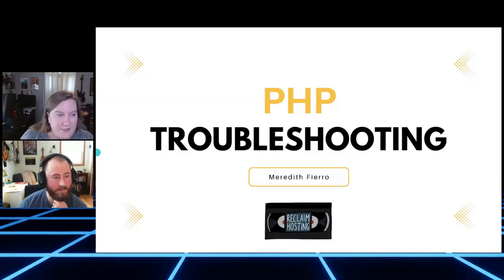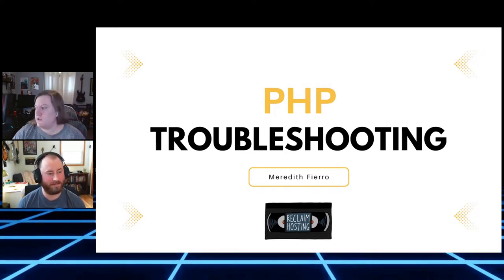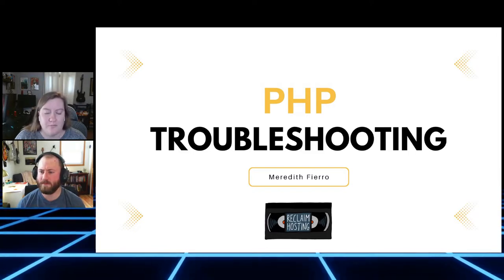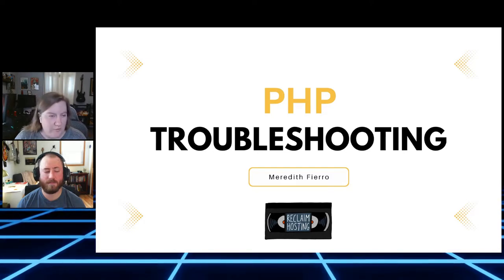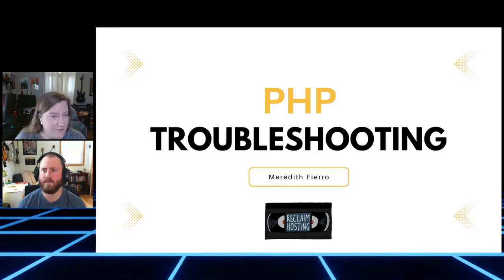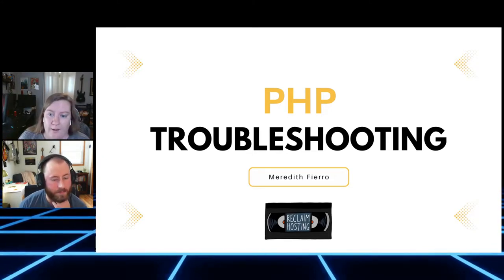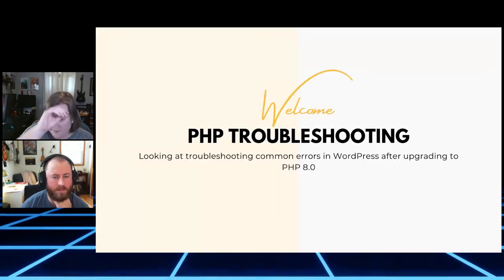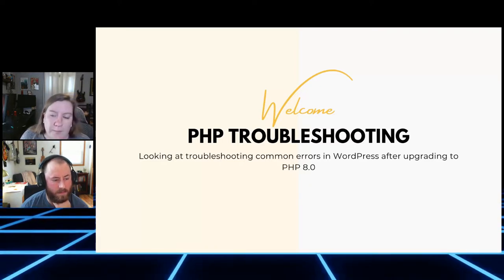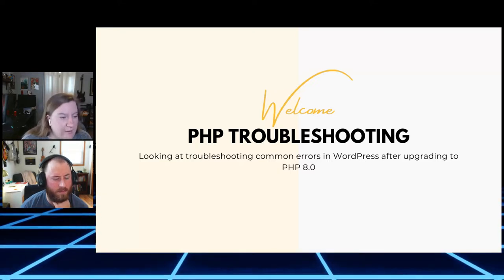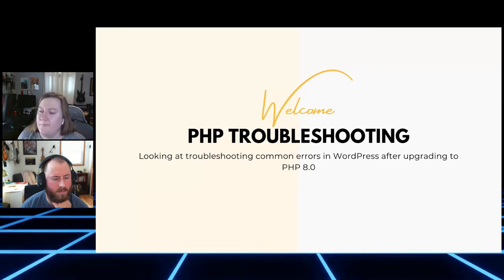Hey there everybody, hello! This is kind of cool — this is our first stream. We're going to jump into PHP troubleshooting on PHP 8, changes we made a couple weeks ago to keep servers on the most recent PHP version. A lot of you have been troubleshooting broken plugins, themes, and sites after this. We've been troubleshooting a lot on Reclaim, so we wanted to do a stream with tips and tricks. We'll focus on WordPress, though error logging can also apply to Omeka or Scalar 2 and similar things.